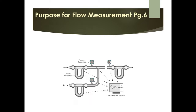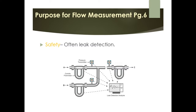The third purpose is safety. We often use flow transmitters as leak detection devices — for example, summing meters on a pipeline where a discrepancy indicates something has been lost or introduced into the system. Flow meters or flow switches are also used on pump seals with a purge gas; if the seal lets go, the purge gas flows and sets off a flow switch.